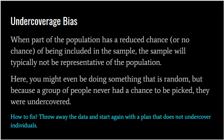Under coverage bias is when part of the population has a reduced chance or no chance of being included in the sample. The sample will typically not be representative of the population. Under coverage bias means something about your selection process completely undercovers a group of people — some part of your population has no chance of being selected. You might even be doing something random, but because a group of people never had a chance to be picked, they were undercovered.